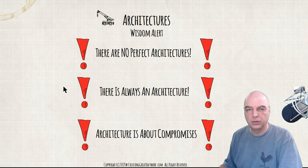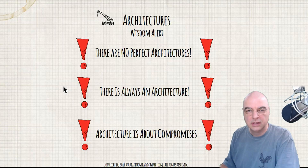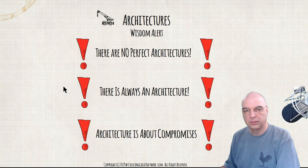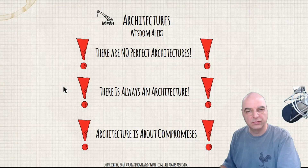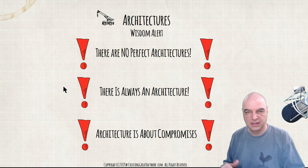There are no perfect architectures — there's always compromises. Either a compromise on the budget, a compromise on the timeline, or a compromise on the features or requirements that you have or are given. You have this triangle of give and take.